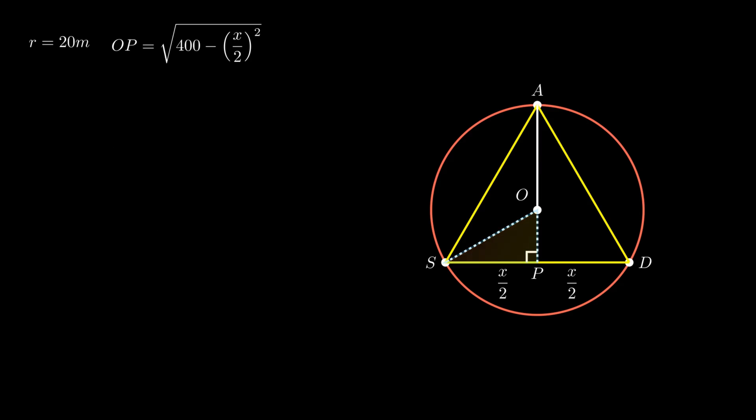Since centroid of an equilateral triangle circumscribing a circle lies at the center of the circle and divides the median in the ratio 2:1, the ratio of segment AO and segment OP is equal to 2 by 1. As segment AO is the radius and equals 20 meters, therefore, on simplifying this ratio, we get 10 equals segment OP.